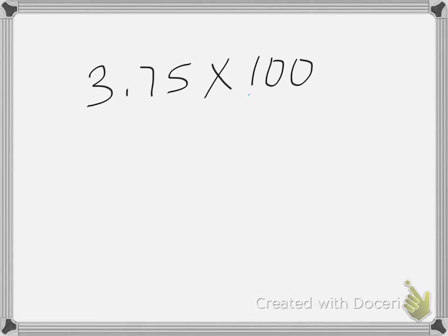In this one, I have 100, and 100 has two zeros. So that means I need to move my decimal place two places to the right. So we're going to move it one, two. So my answer is 375.